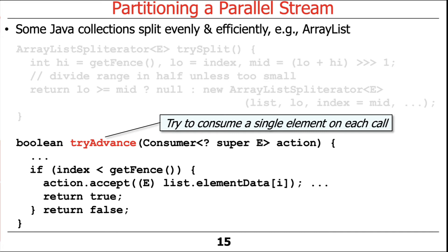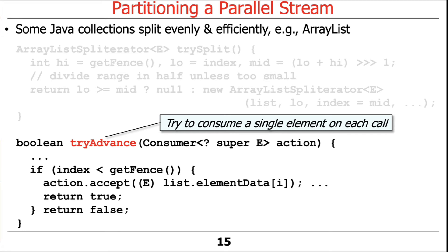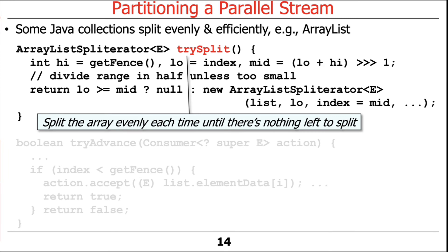Here's what tryAdvance does for ArrayList. Since we've split down to one element, tryAdvance checks if index is less than end; if so, it takes the next element, accepts it into the consumer action, increments index, and returns true. The next call will return false because index has been incremented past the end. If there's nothing left, it returns false immediately. The key takeaway: ArrayList splitting is very efficient — it's a constant-time operation, just adding two numbers and dividing by two.